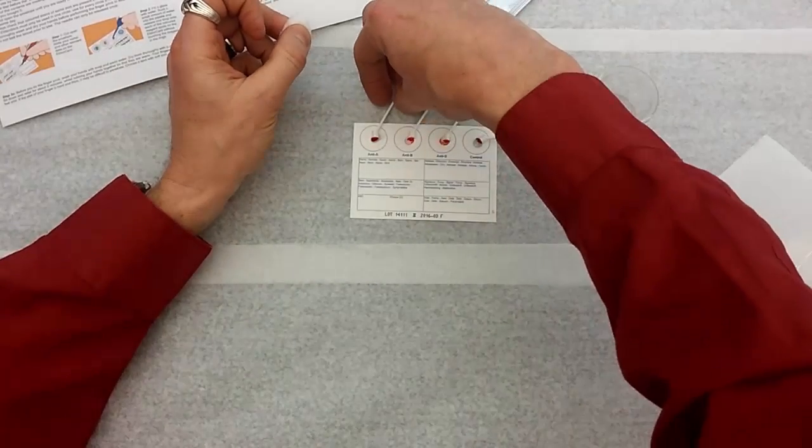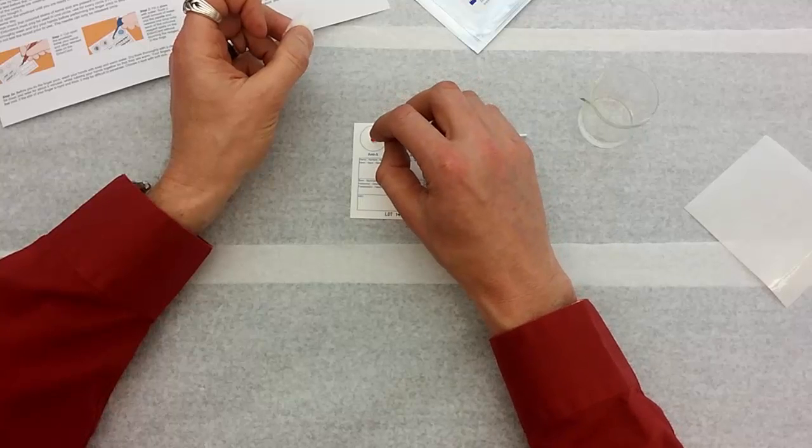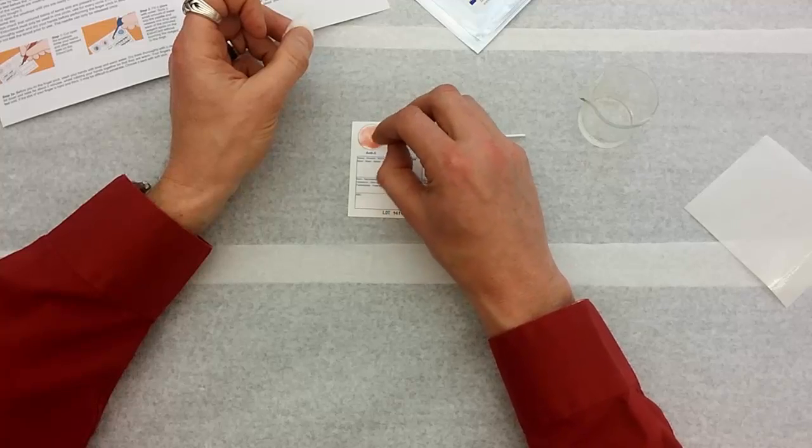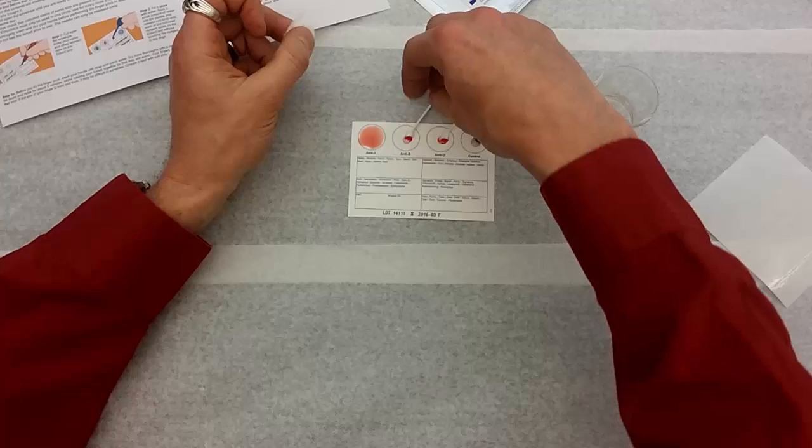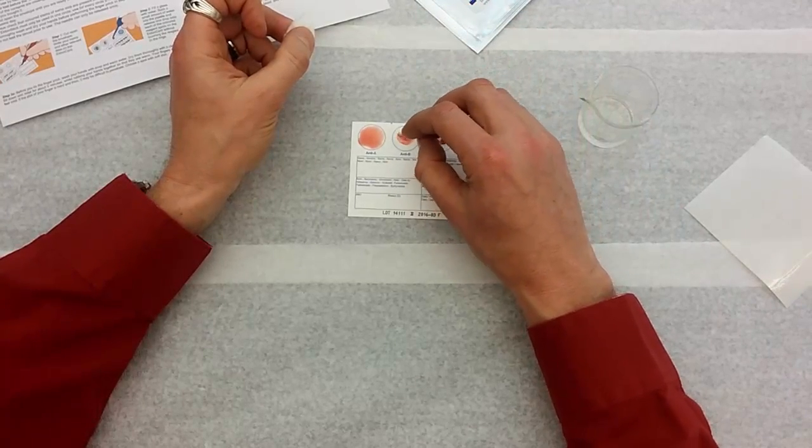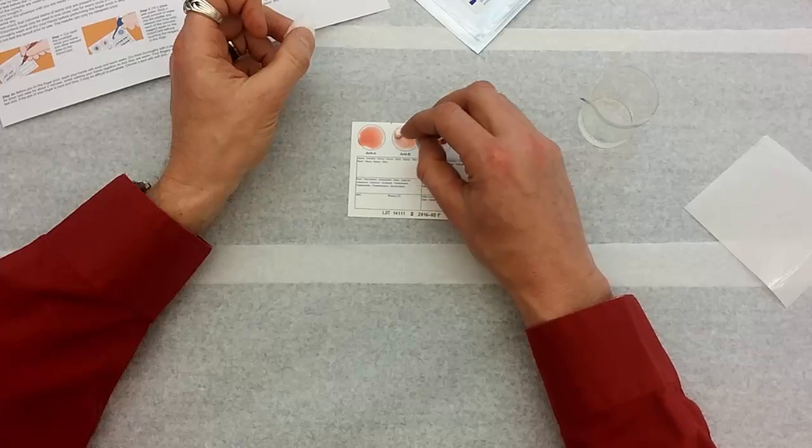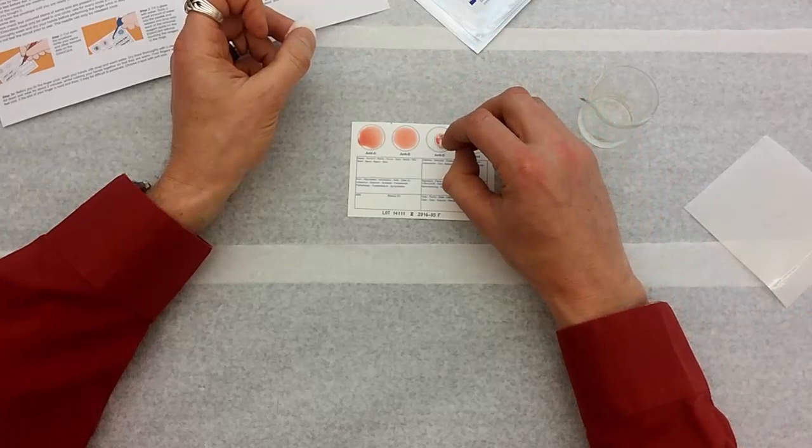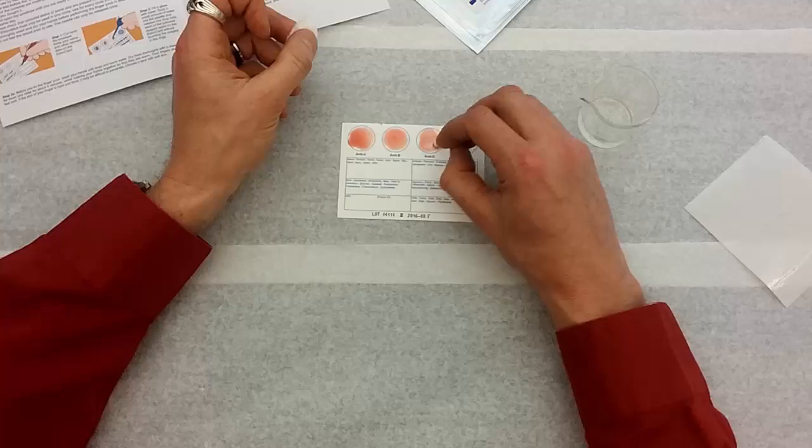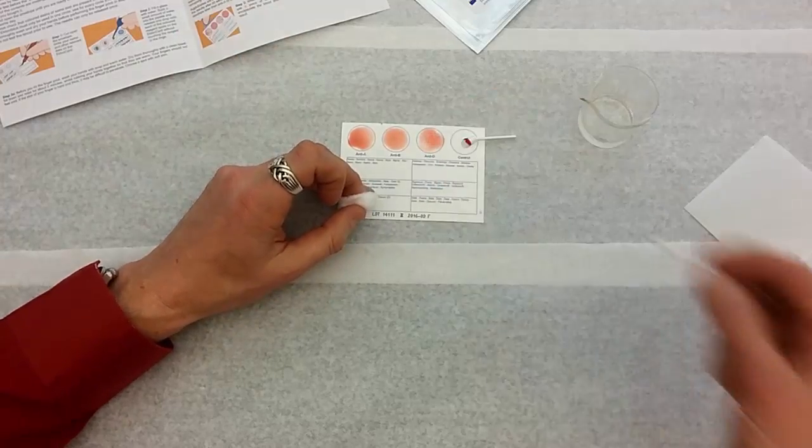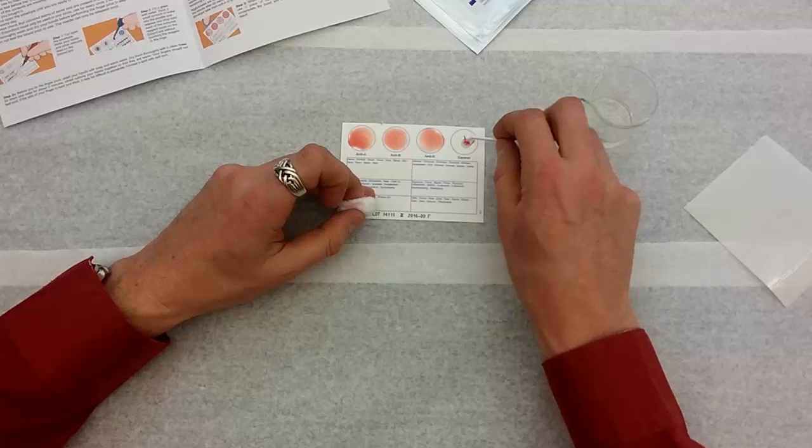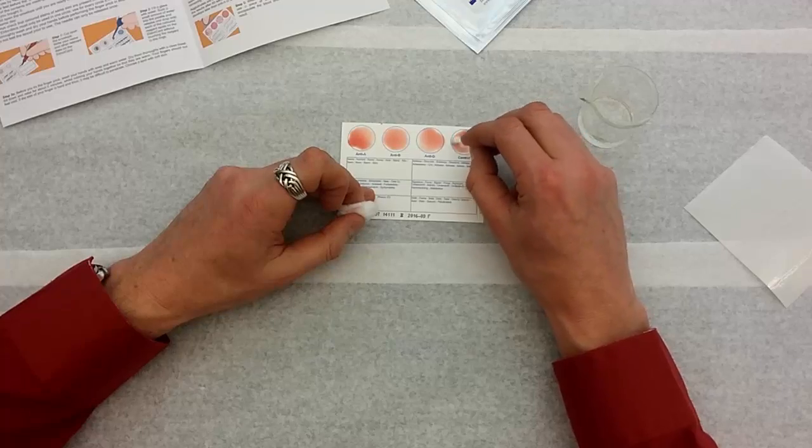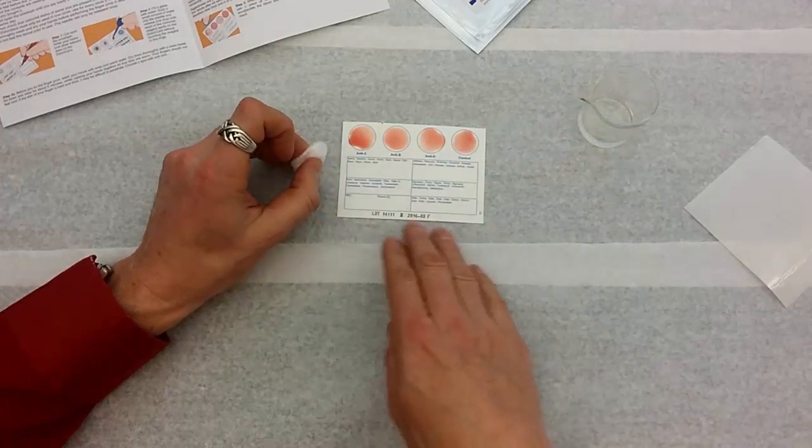And the next thing to do is to pick up each one of these spatulas in turn and stir up the sample and spread it out in that circle for 10 seconds. And then toss the spatula. Got to stabilize the card. And we're done with that mixing.